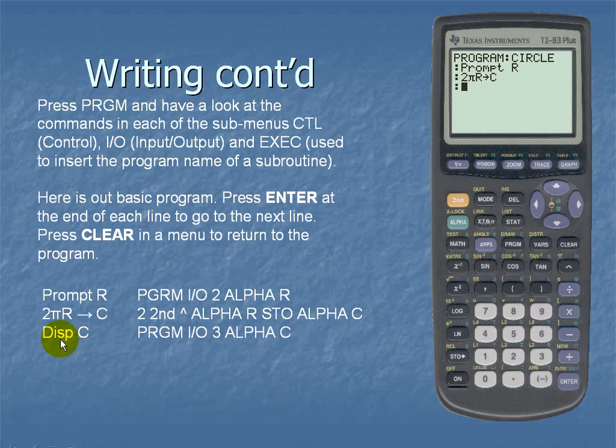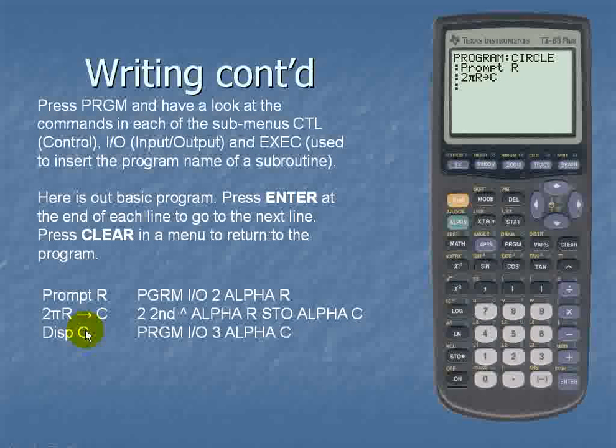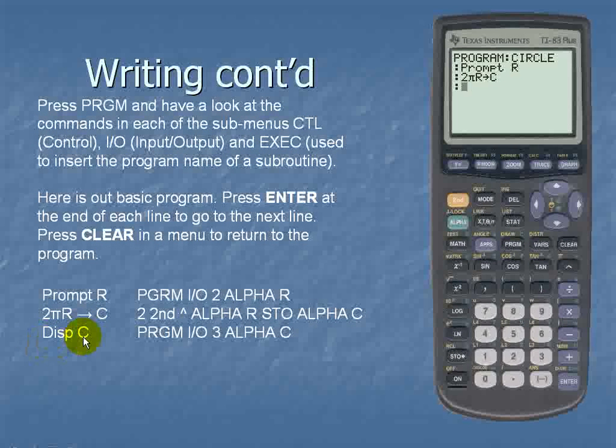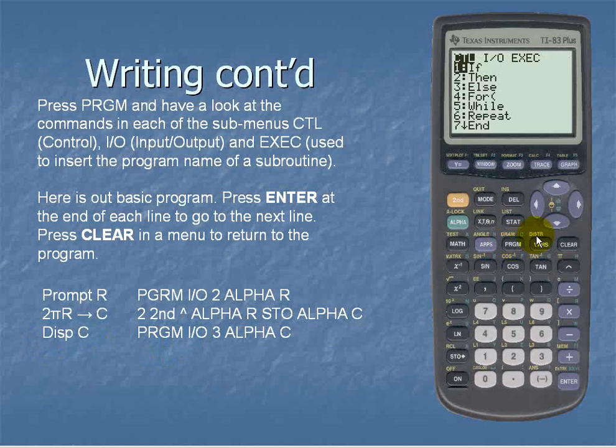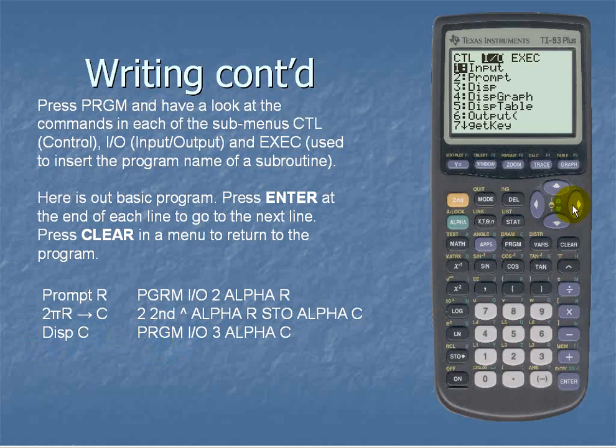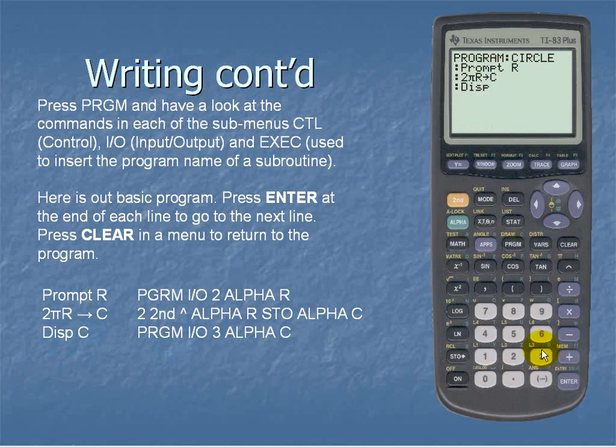And last thing we want to do for this program is we want to display the value for the circumference which we stored for C. So here we want to display C. So for display we go to program over to input output and display is our third option. And we want to display C. So alpha and C.